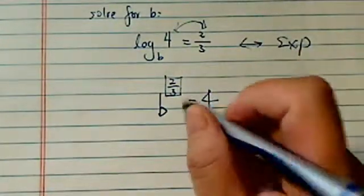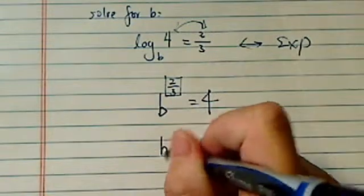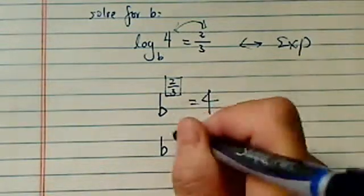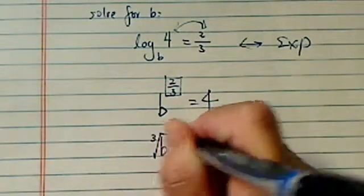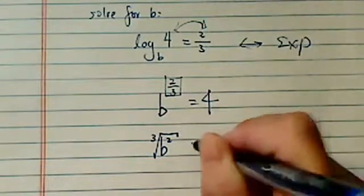From here, how do we solve this? Well, this one is, let's write it in a more recognizable form. You know, there's cubic root of b squared equal to 4.